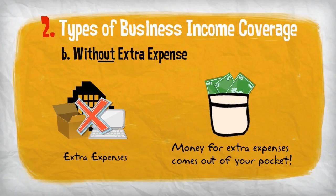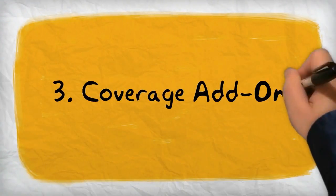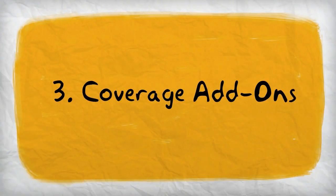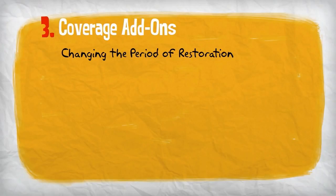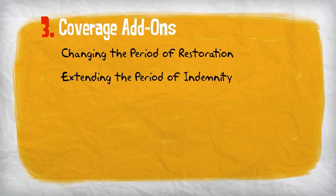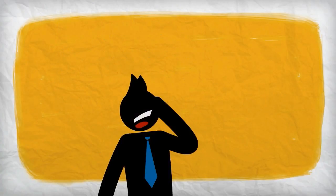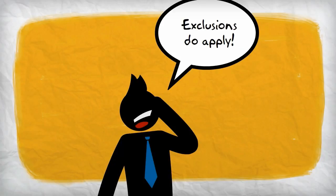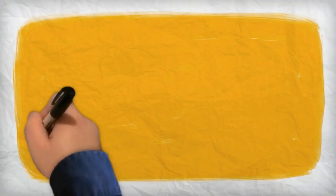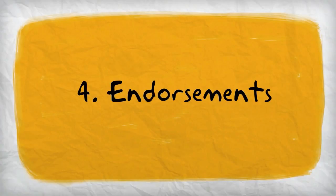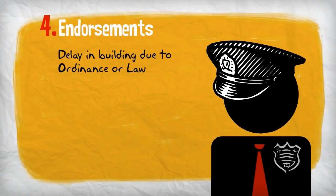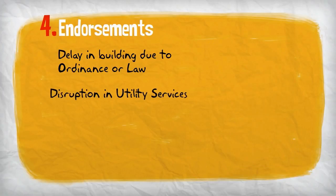For businesses that require more specialized coverage options, there are several coverage add-ons available to help meet your needs. These include changing the period of restoration, extending the length of time you can receive benefits from the business income policy — called the period of indemnity — or limiting or excluding payroll expense of your employees. Endorsements are also available to help you address situations such as delay in rebuilding due to an ordinance or law, or a disruption in utility services.